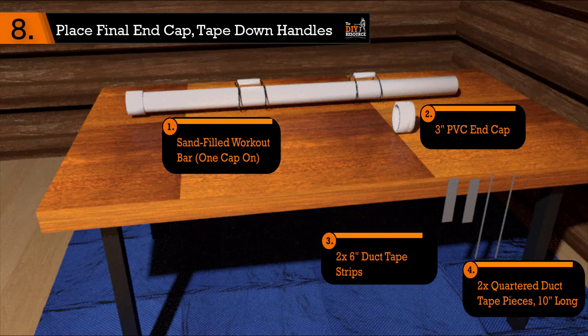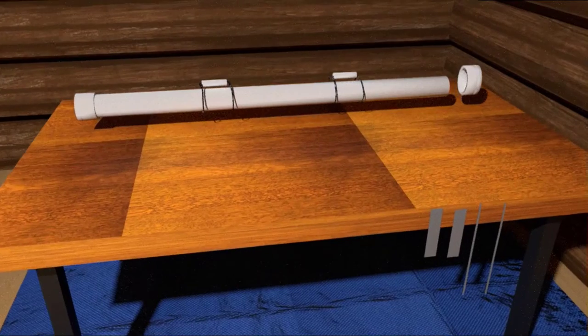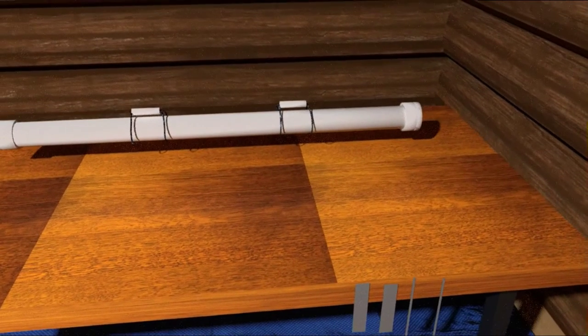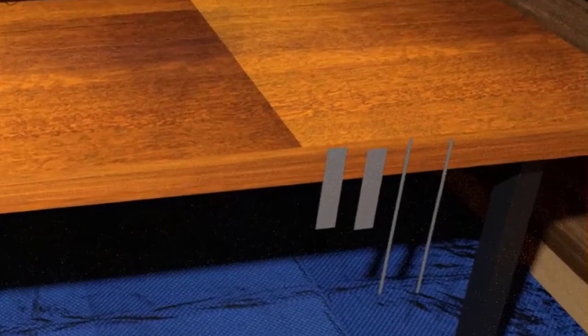Step 8. Place final end cap and tape down handles. With the chamber completely filled with sand, place your final end cap on to seal the chamber. Once again, ensure that this is tight before you decide to use the workout bar. To finish this last step, grab your roll of duct tape and rip off two 6 inch sections as well as two thin, quartered, 10 inch sections.